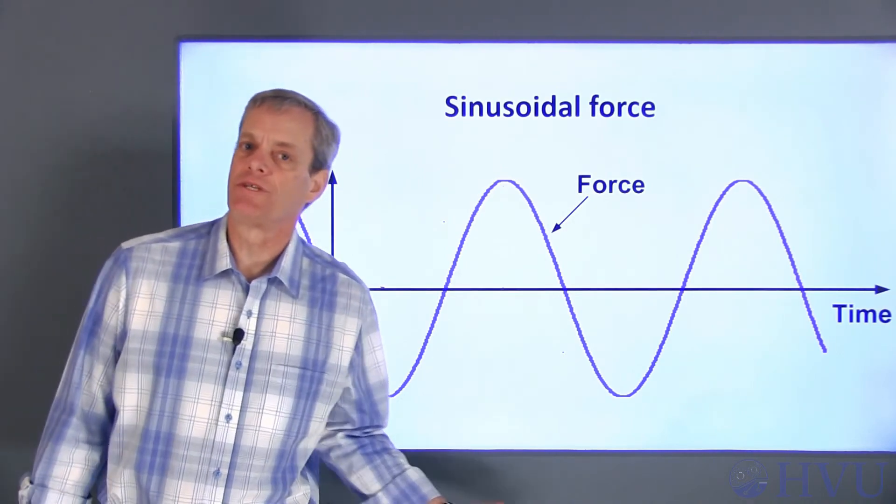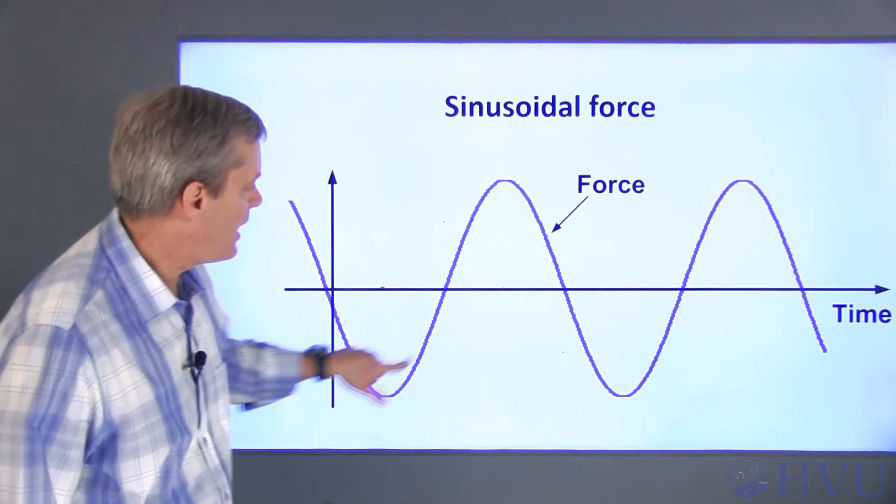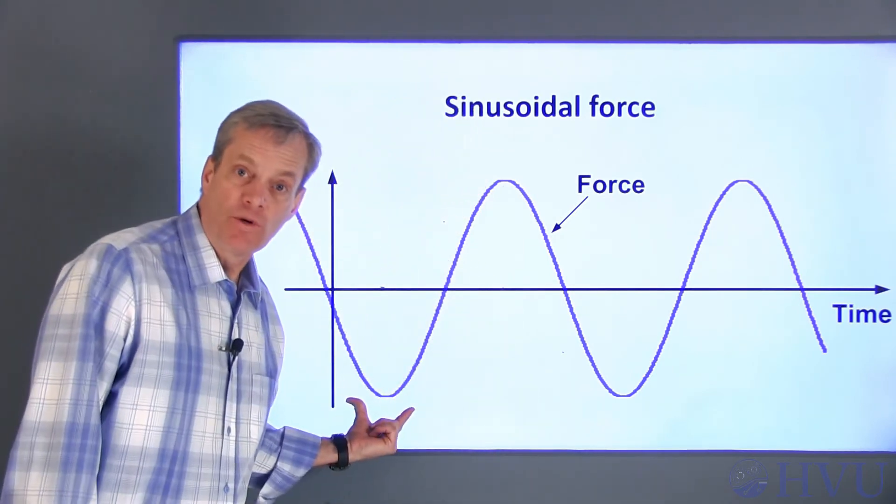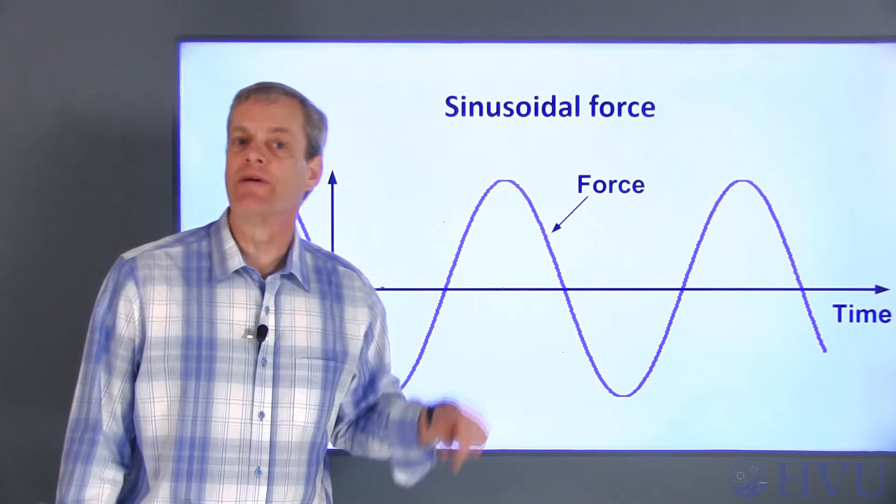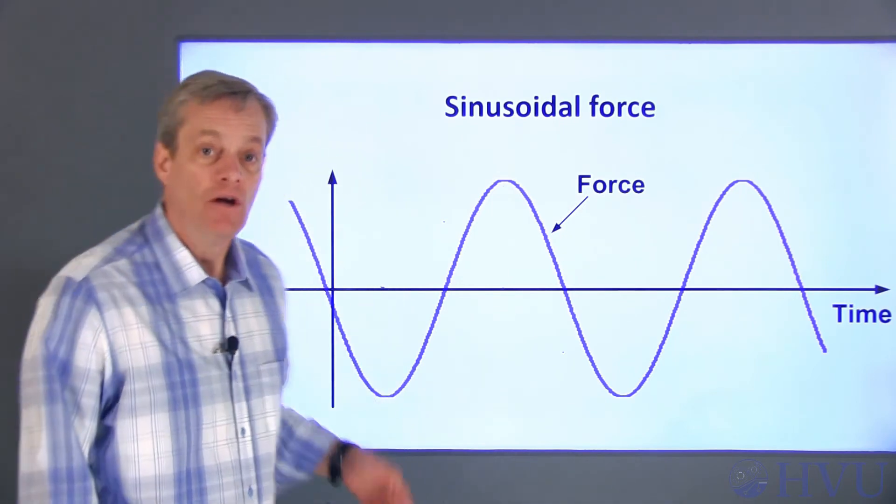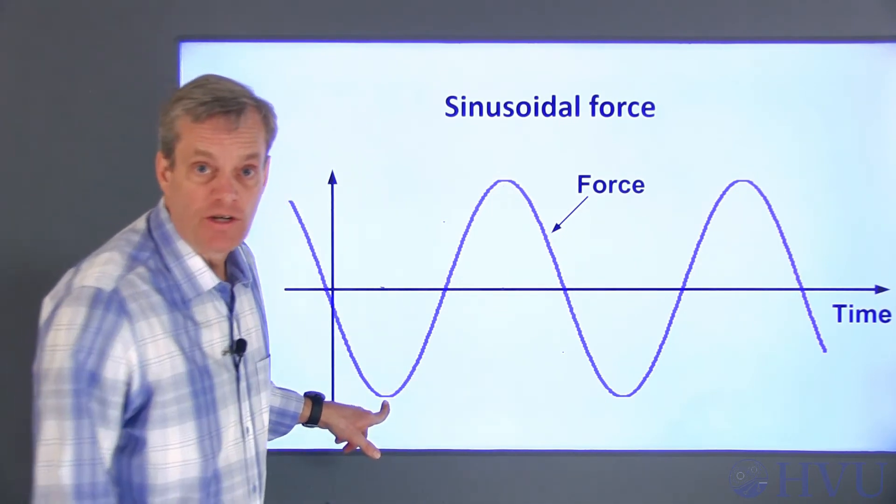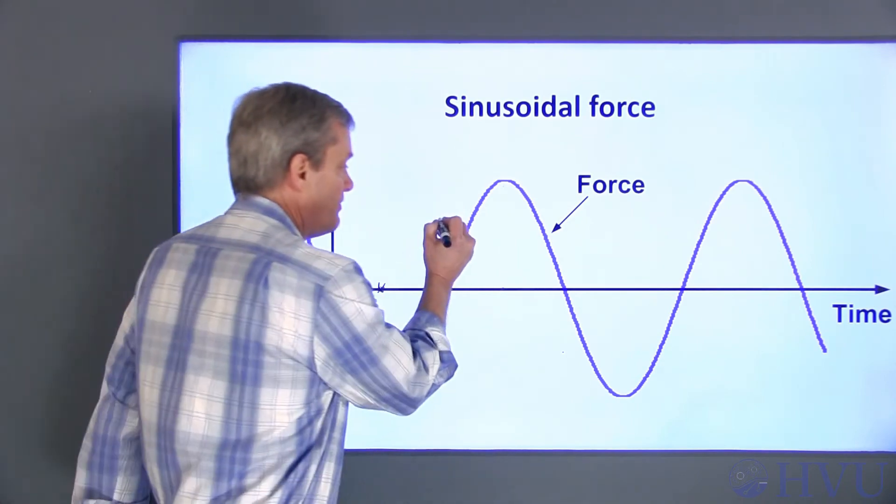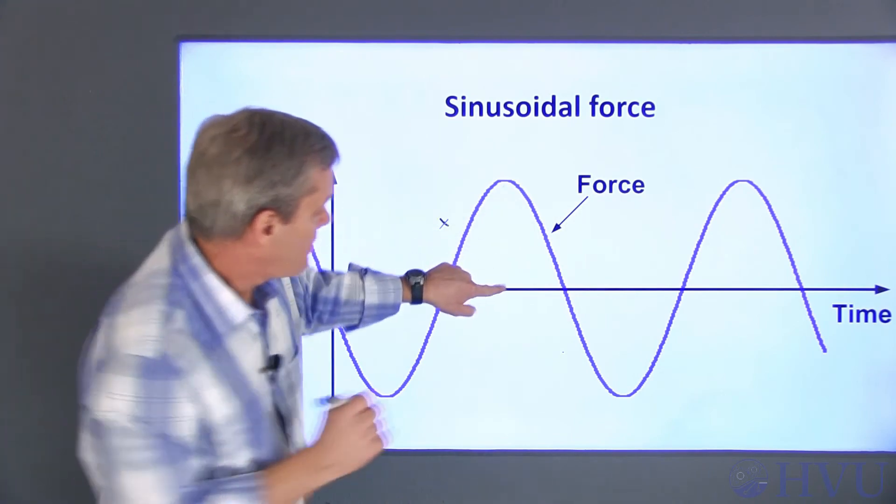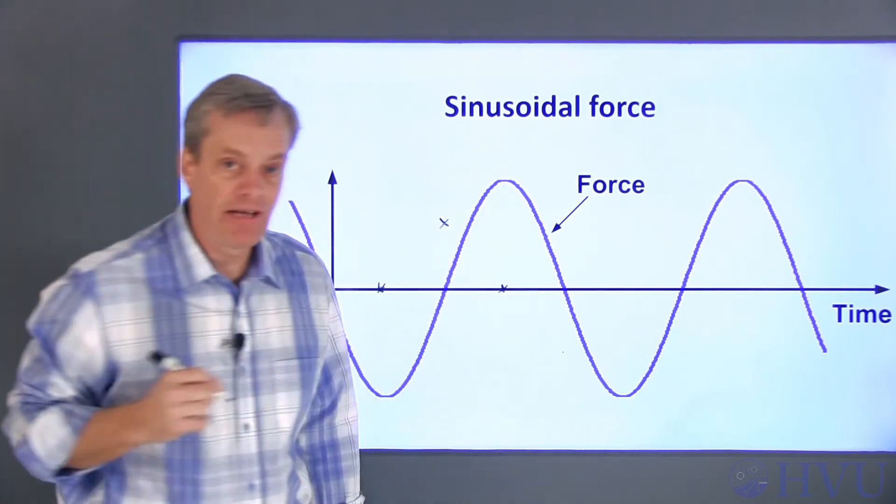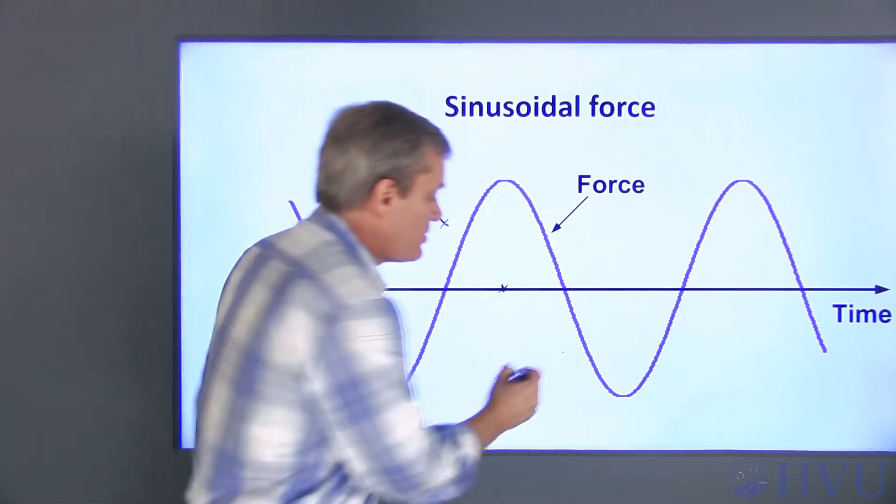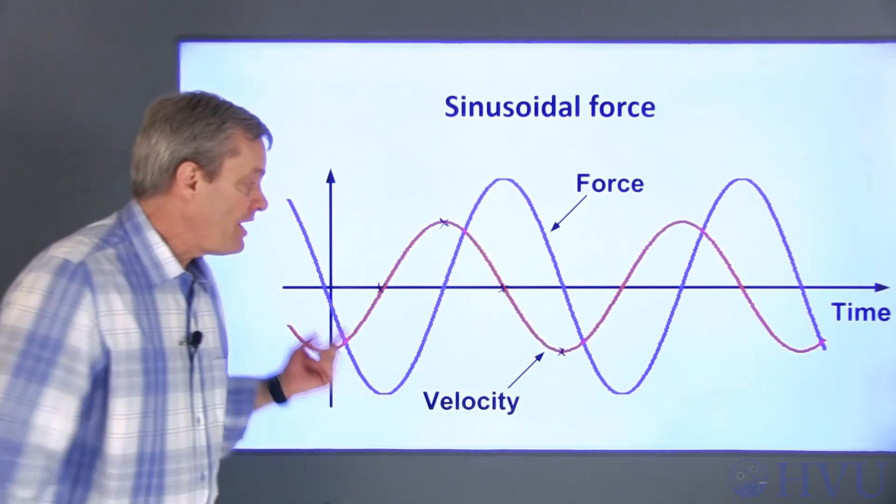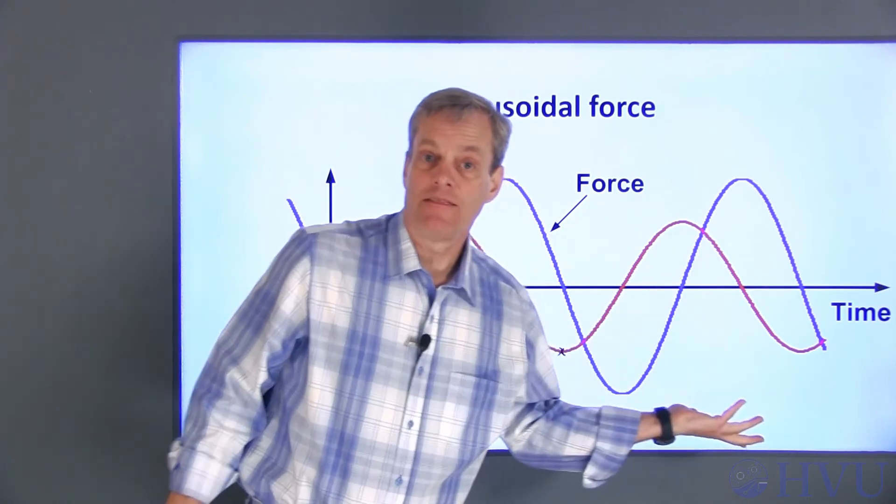An example of a force that varies with time could be this oscillating sinusoidal signal. If we apply this force to the mass, this curve will then be the derivative of the mass's velocity. Here, the slope of the curve is zero. Here the slope of the curve is its maximum positive value. Here the slope of the curve is zero again. And at this point, the slope of the curve is its maximum negative value. So the velocity curve will look something like this.